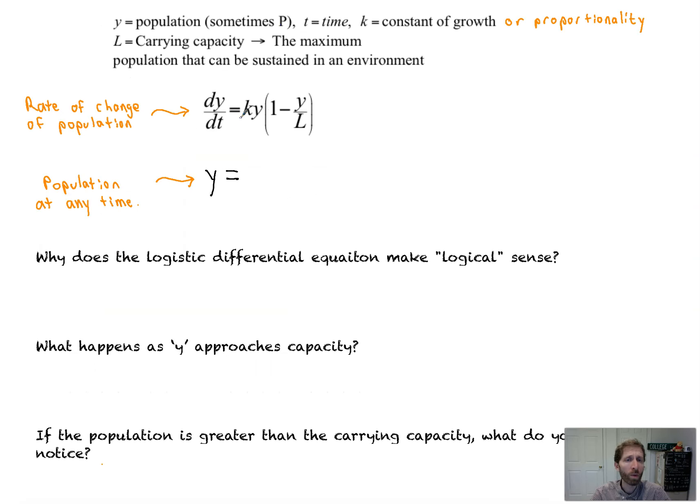Looking here, what we've got is the general differential equation, dy/dt equals... and then we've got all these variables. Let's let y equal the population of some amount of people or animals, it could be bacteria, whatever it is. And k is your constant of growth, or proportionality. Y, again, is your population value. L is this new variable we've yet to see before. That's known as the carrying capacity. That's the maximum population that an environment can hold.